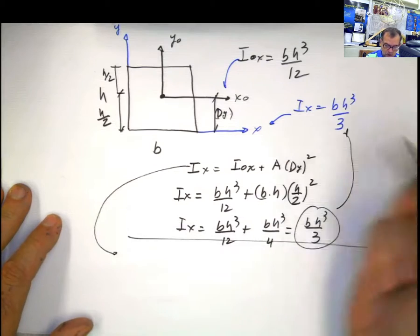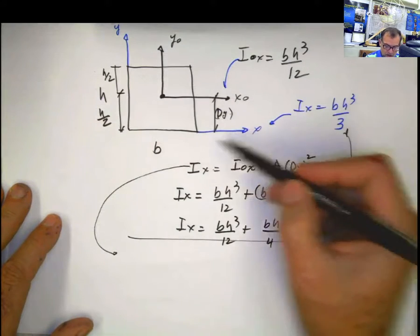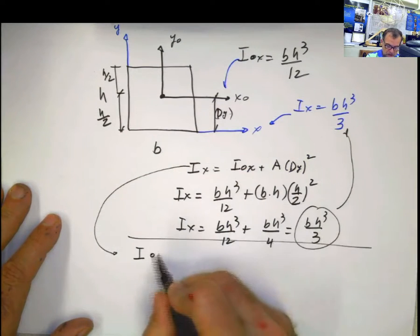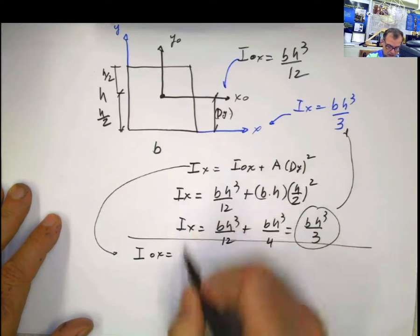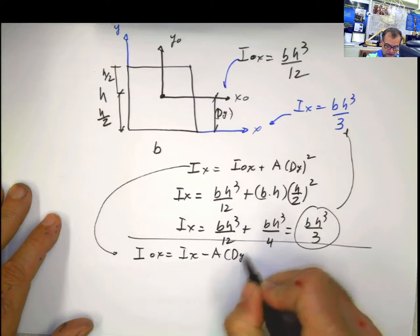let's say that I have now the moment of inertia with respect to this axis, and I want to convert it to the centroid. So if I want to do that, then I have to solve in that equation, I sub 0x equal I sub x minus A times a distance in y squared.